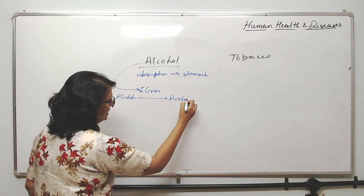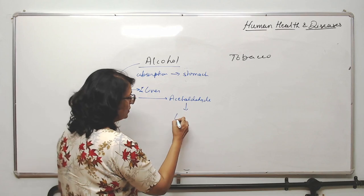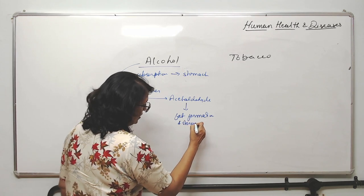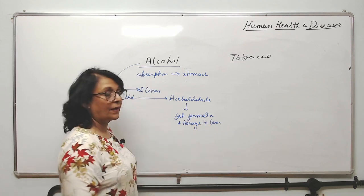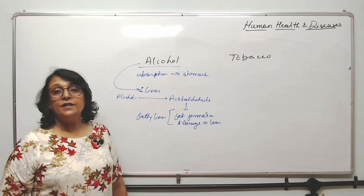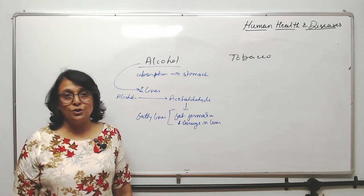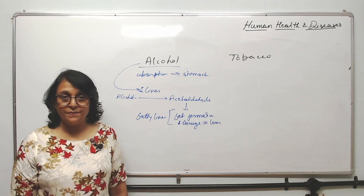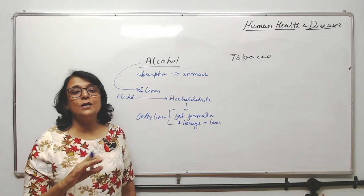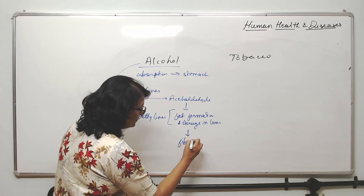In the liver, alcohol gets converted into acetaldehyde. This acetaldehyde promotes fat formation and storage in the liver — a condition known as fatty liver. The liver is not the place where fat should be stored, so this is an abnormal condition. Whenever there is an abnormal condition in any part of our body, we try to isolate it with fibers, and this fiber is collagen.